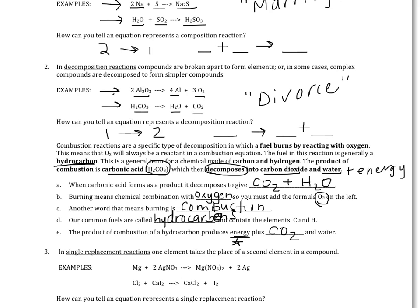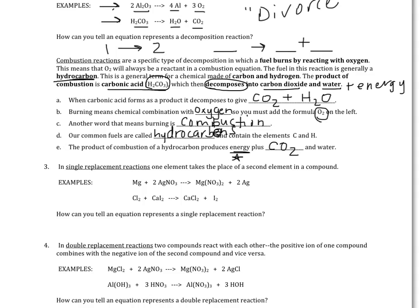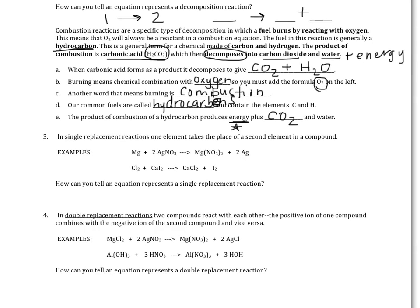After decomposition reactions, we're on to our third type: the single replacement reaction. In the first example, you start with a single element — magnesium — and a compound. The compound is made of two parts: silver and the nitrate polyatomic ion. If you look at the products, the magnesium swooped in and replaced the silver, so now you have magnesium and nitrate together, and silver is alone.